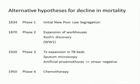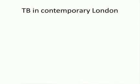The data supports this: initially a small drop in TB where the new poor law came in; a second phase reduction with expansion of workhouses; a third phase as we began to identify infection by looking for Koch's bacillus; and finally a very rapid decline with antibiotics and effective treatment.